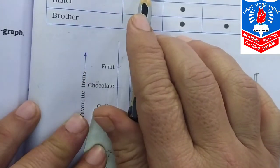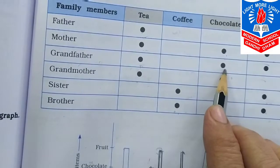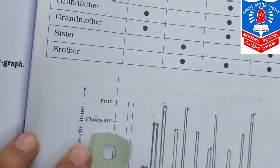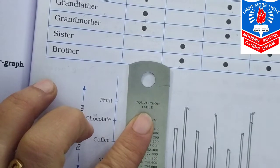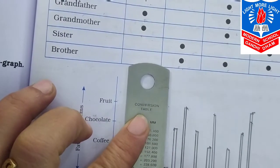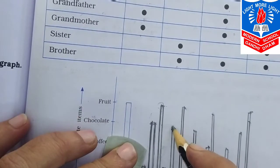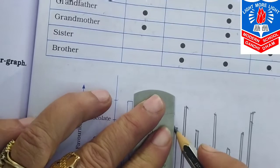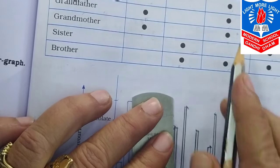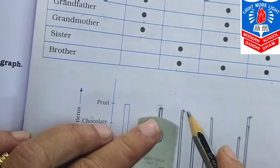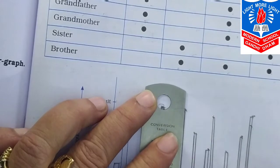Then grandfather — grandfather likes tea, chocolate and fruit. So first we draw the box at tea by putting a dot. Then for chocolate we draw a box, and then for fruit we put a dot and draw a box too.